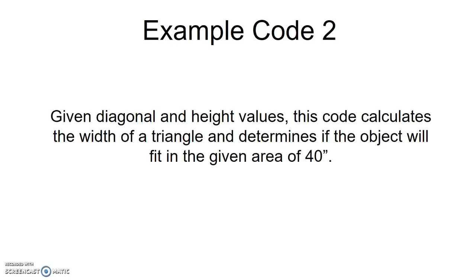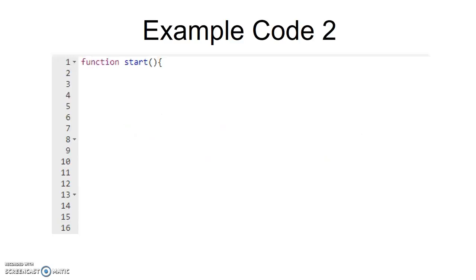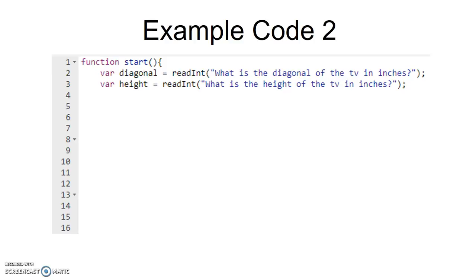So if our area is 40 inches, we want to write a code to see if the TV will fit in that area. We have the function that we're going to start with, and we're going to take the diagonal and height values from the user as we did before.